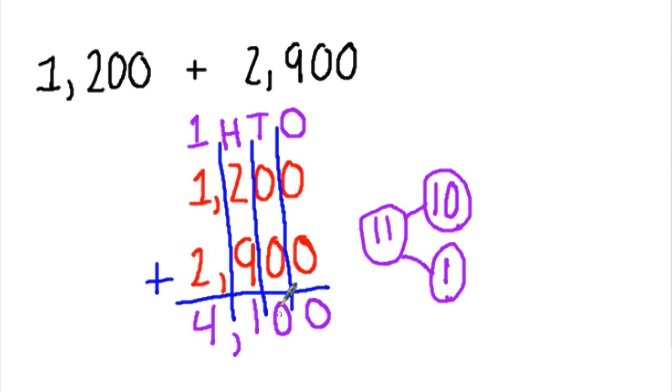I need to remember my comma. And now I have my final answer to one thousand two hundred plus two thousand nine hundred, which is four thousand one hundred.